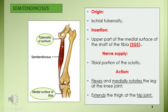Of the medial hamstrings, the one lying superficially with a smaller belly and a long cord-like tendon of insertion is semitendinosus. It takes origin from the ischial tuberosity. The insertion is on the medial surface of the medial condyle and shaft of tibia, where it is inserted along with two other muscles — sartorius and gracilis — all three together called pes anserinus, or guy ropes. Being a typical hamstring, it is supplied by the tibial part of the sciatic nerve and acts to extend the hip, flex the knee, and medially rotate the leg at the knee joint.